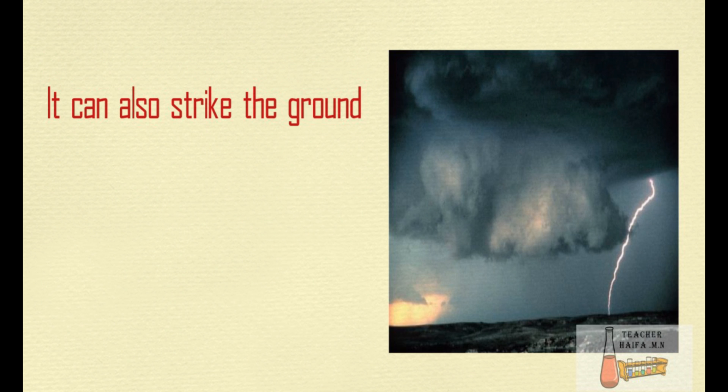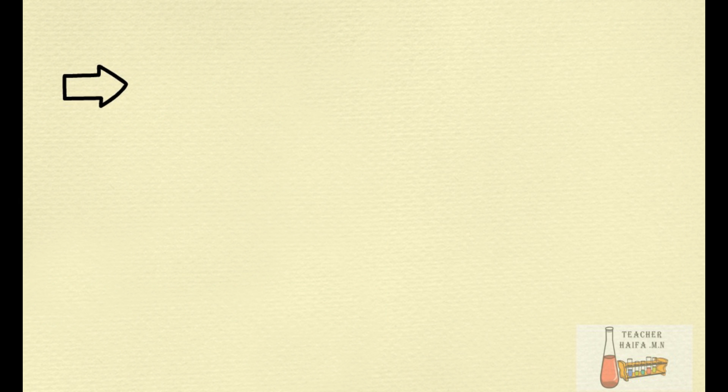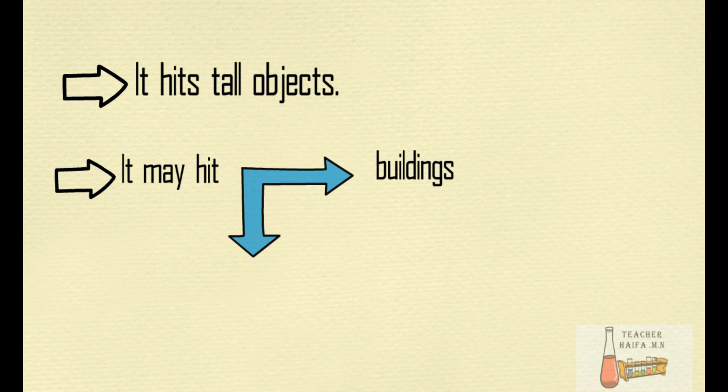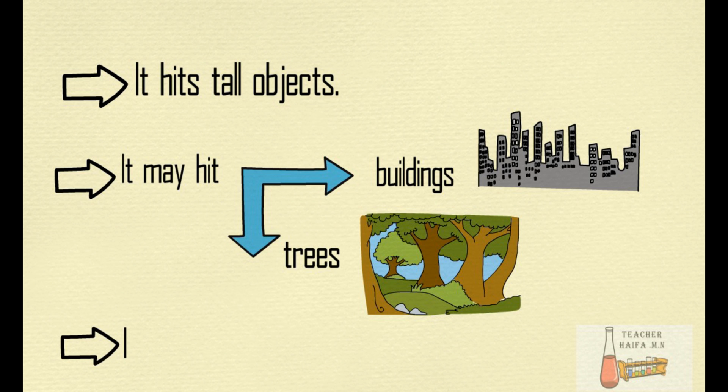It can also strike the ground. When that happens, lightning takes the shortest path. It hits tall objects. It may hit buildings or trees. It may also hit people.